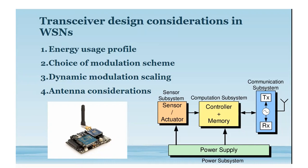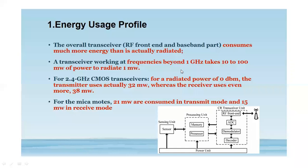While considering the energy usage profile, the transceiver consumes more energy while radiating. Transceivers working at frequencies beyond one gigahertz take some 10 to 100 milliwatts of radio power, depending on the data rate. For a 2.4 GHz transceiver, a radiated power of 0 dBm means it radiates only 32 milliwatts, whereas the receiver uses even more — 38 milliwatts — while the radiated energy should correspond to a very low value of 1 milliwatt.